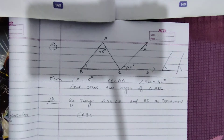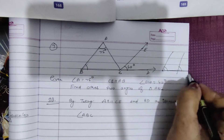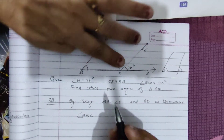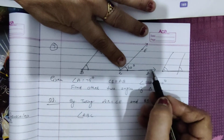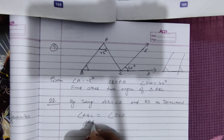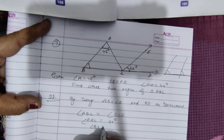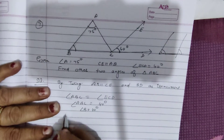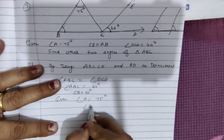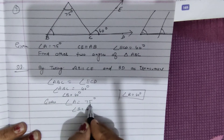You will see these two angles — if we take these two lines as parallel and this is the transversal, these two angles become equal. So similarly, angle B and 40 degrees will be the same. So angle ABC is equal to angle ECD, which is 40 degrees. Angle B is equal to 40 degrees. Angle A is equal to 75 degrees, angle B is equal to 40 degrees.